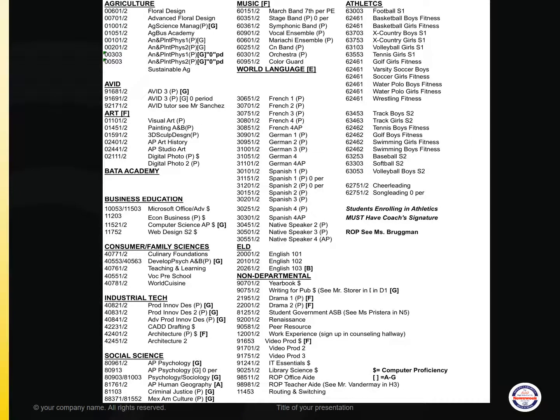This slide references all of the elective options. Please take note: if a course is followed by a dollar sign, it fulfills the computer proficiency for graduation, and brackets represent that the course meets an A through G requirement. Starting with Agriculture, the options are Floral Design, Advanced Floral Design, Ag Science Management, Ag Business Academy, Animal and Plant Physiology 1 and 2 (also offered zero period), and a new course, Sustainable Ag.